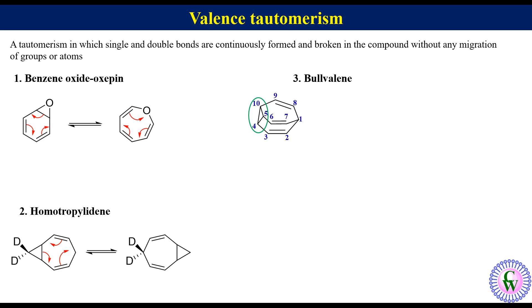If it undergoes Cope rearrangement, it will give this equivalent structure in which carbons 1, 2, and 7 are part of the cyclopropane ring. But this molecule could have also undergone such rearrangements to put cyclopropane ring at 1, 7, 8 or 1, 2, 8. Any of these could have undergone several Cope rearrangements.